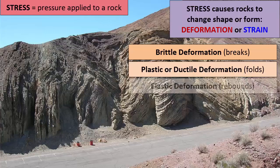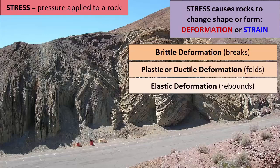And in some cases, strain or deformation of a rock isn't permanent. When the stress is eventually released, the rocks go back to their original shape. We call that type of strain or deformation elastic deformation.